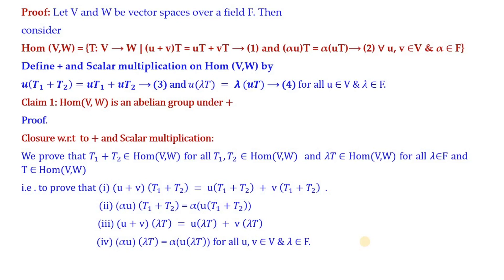In order for Hom(V,W) to be a vector space over F, we need two operations: addition and scalar multiplication. Addition is defined as u(T1+T2) = uT1 + uT2 (equation 3), and scalar multiplication as u(λT) = λ(uT) (equation 4). Both are defined for all u in V and λ in F.